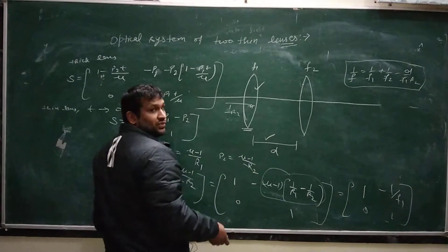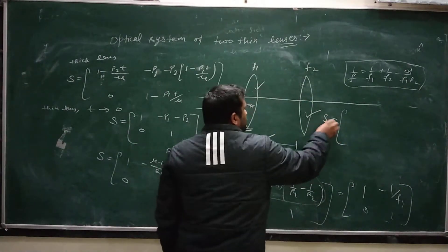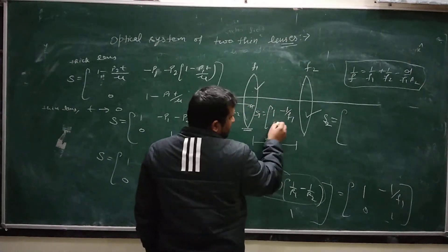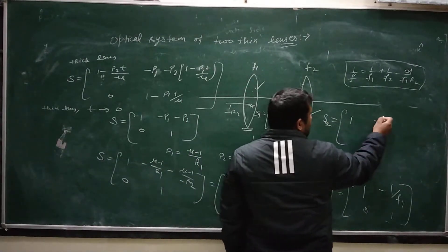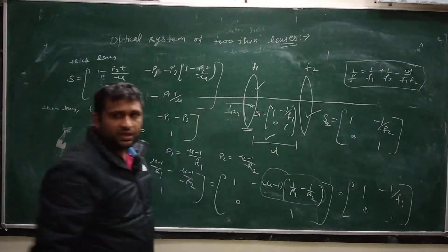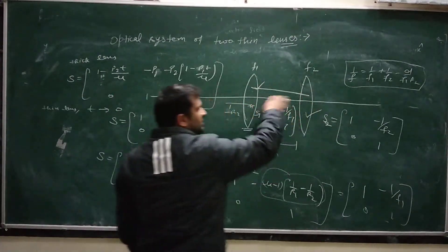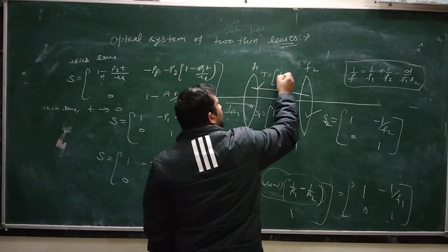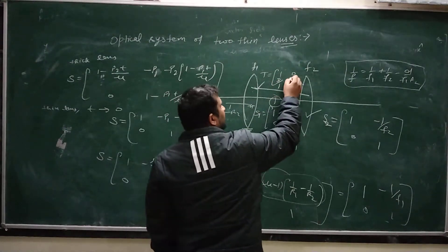The separation between the two lenses is D. The system matrix S1 for the first thin lens is [1, 0; −1/f1, 1], and for the second thin lens, S2 is [1, 0; −1/f2, 1]. There is a translation between these two lenses of distance D. Since the medium between them is air, μ = 1, and the translation matrix is [1, D; 0, 1].